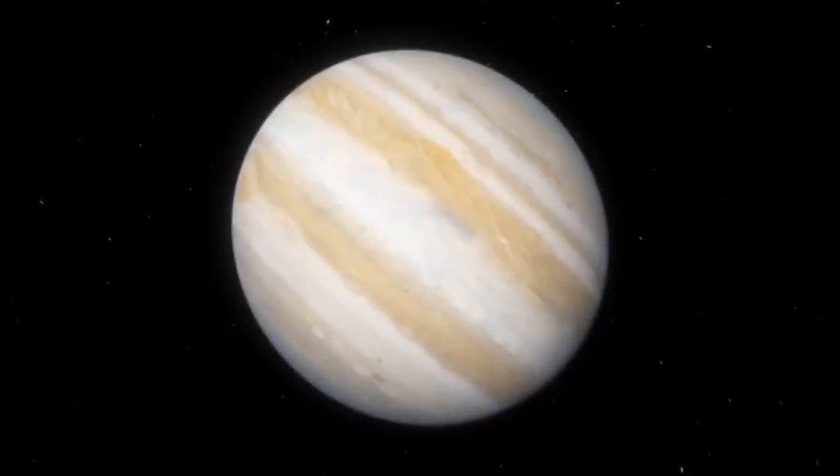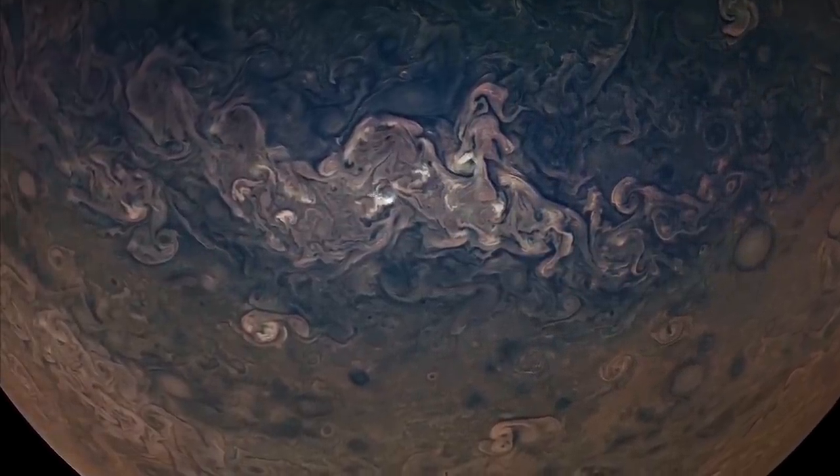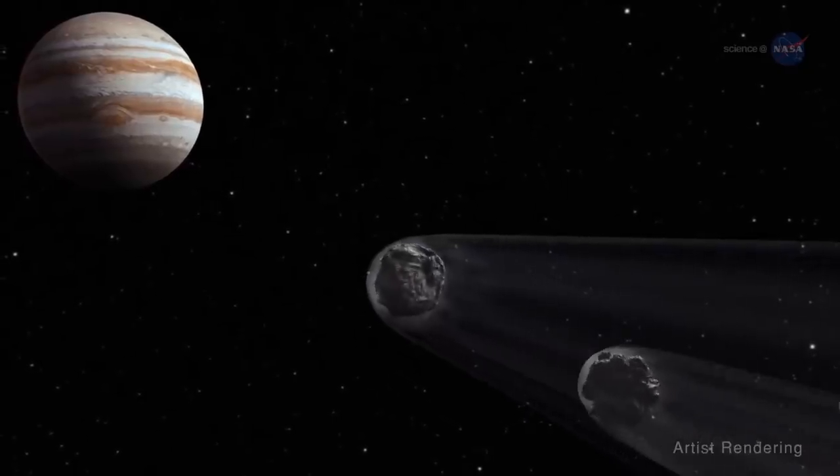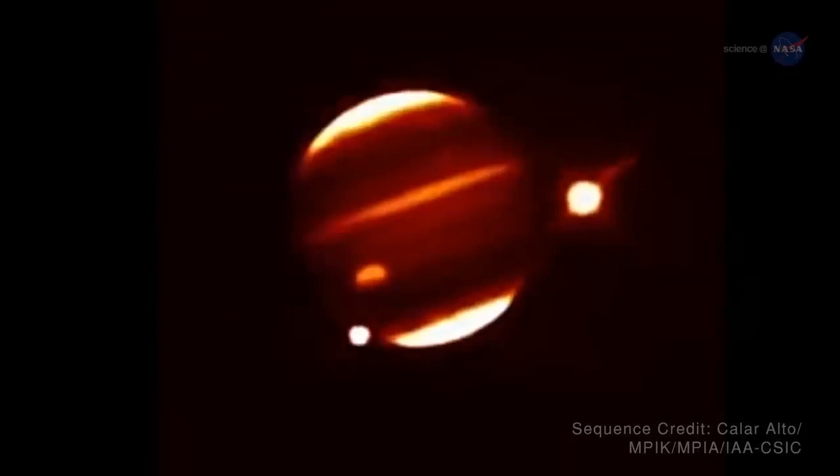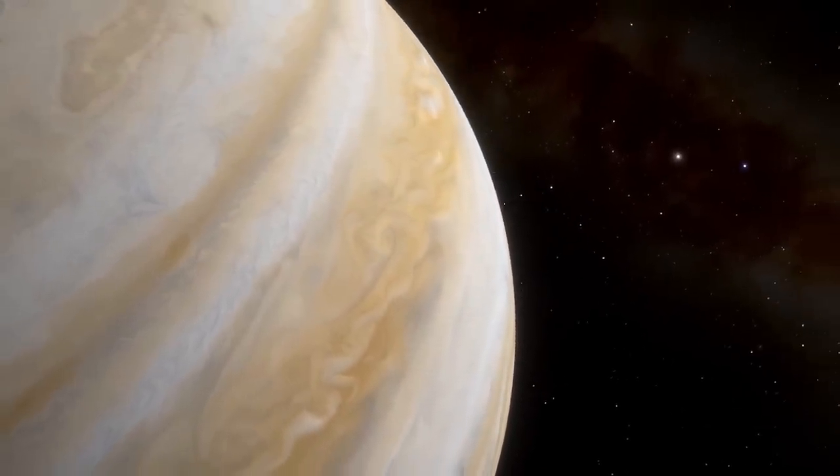Jupiter is an invincible gas giant. It affects the orbits of all the planets in the solar system and can withstand a meteorite impact that would destroy the Earth.